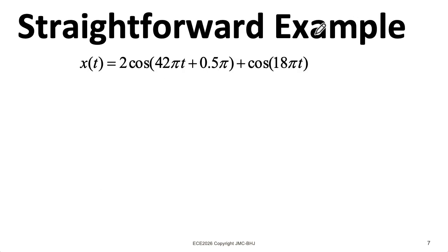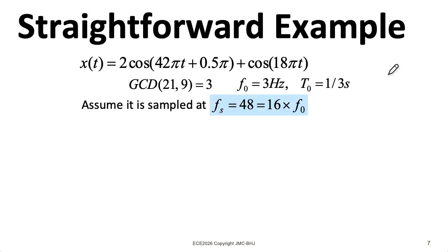Let's look at an example with a sum of two sinusoids. One of these sinusoids has a frequency of 21 hertz, and the other has a frequency of 9 hertz. The GCD of 21 and 9 is 3. So the overall signal has a period of 3 hertz. To make life easy, let's sample it at 16 times the fundamental frequency. So that's 16 times 3, which is 48 samples per second.